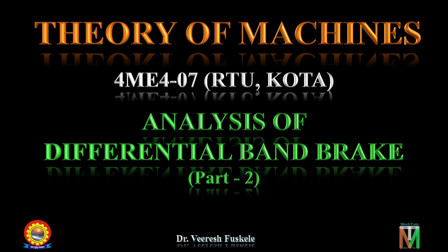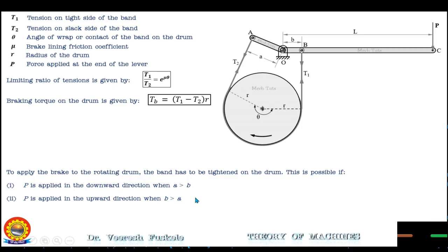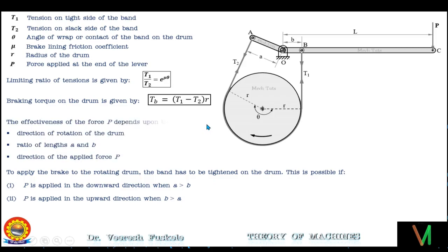In part 1 of this lecture we discussed the construction details of the differential band brake and learned about the direction of force applied when distance a is greater than b and when a is less than b. We also discussed the factors on which the effectiveness of the applied force depends, namely the direction of rotation of the drum, ratio of lengths a and b, and the direction of applied force.